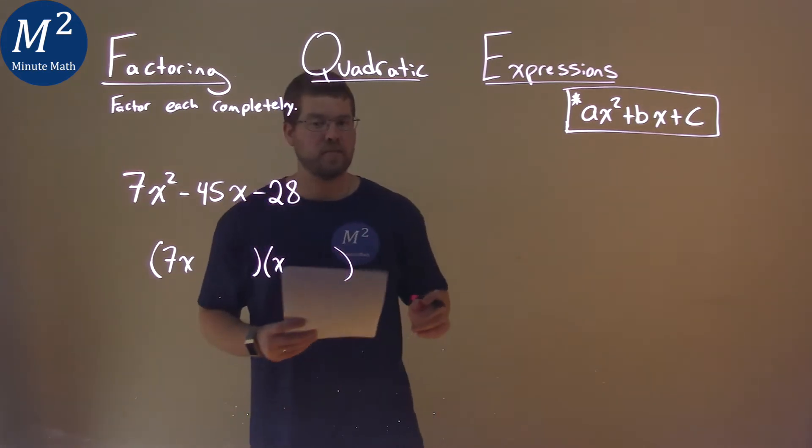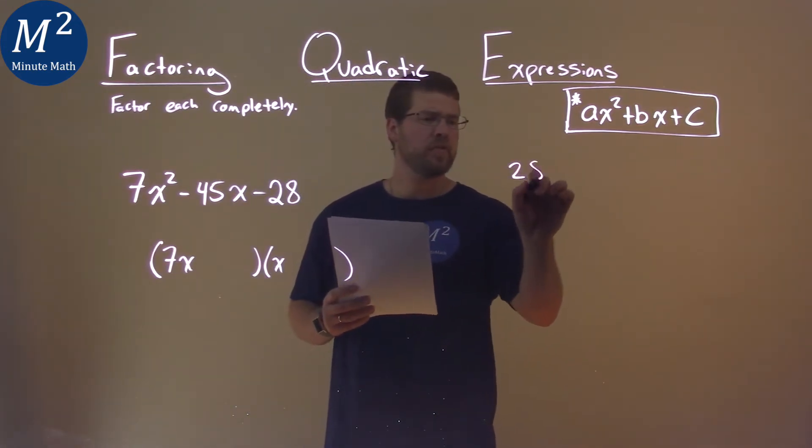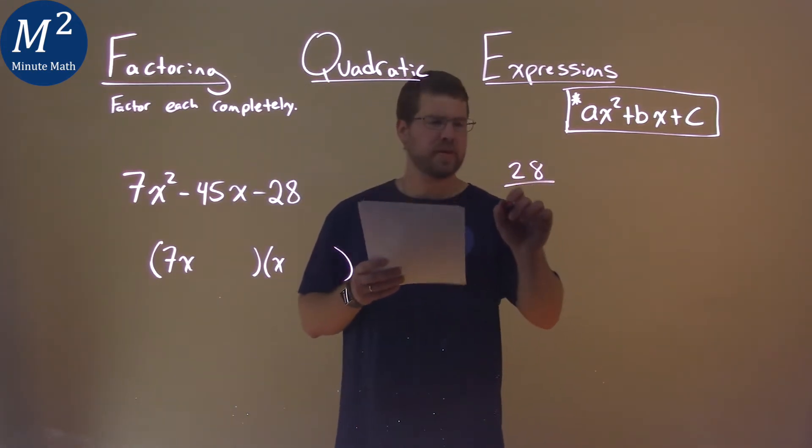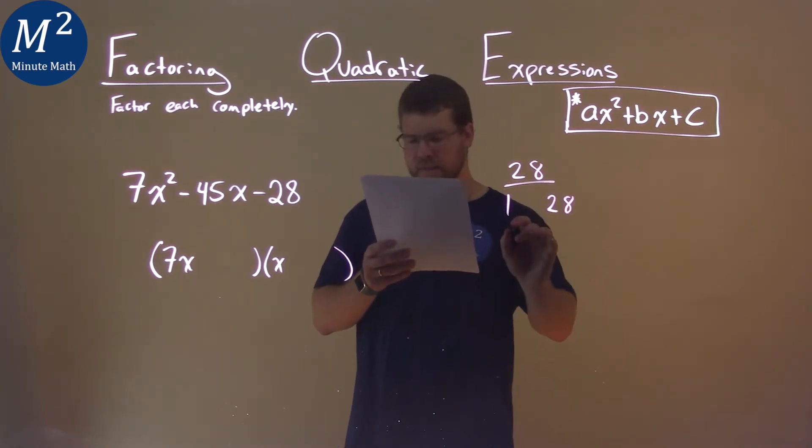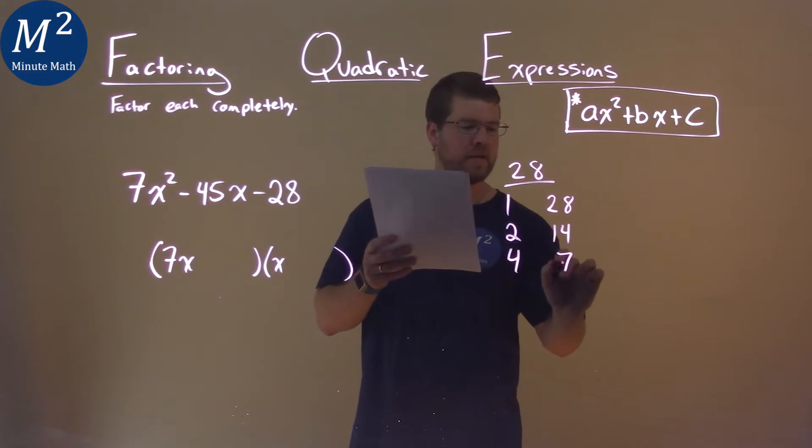Now let's look at the -28. What two numbers multiply to be a positive 28? Well that's 1 and 28, 2 and 14, and 4 and 7.